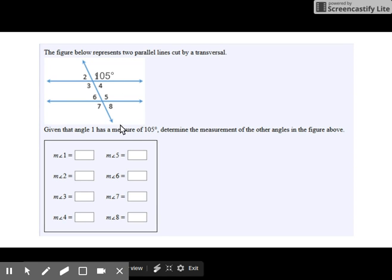Angle one is 105 degrees. Next, we'll look at angle five. Angle one and five are corresponding angles. They are congruent.